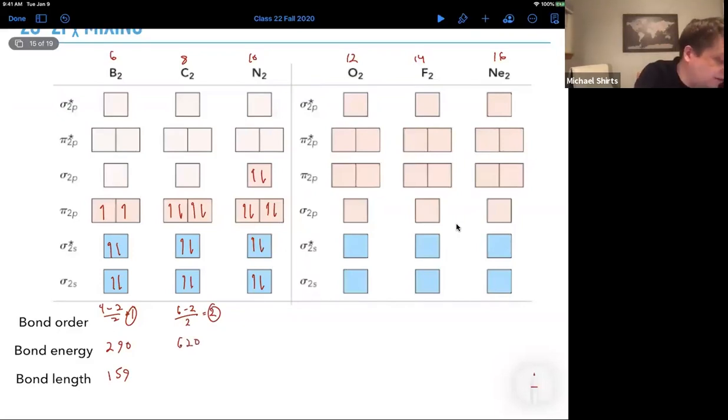So, it's the double bond, right? Bond order two, it's stronger and the bond length is going to be shorter, 131.